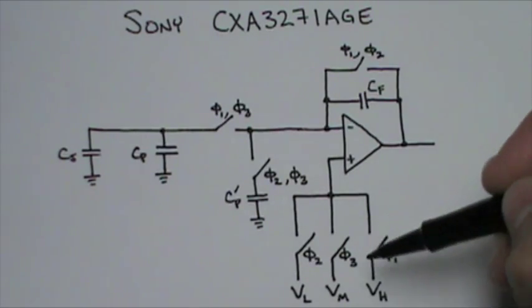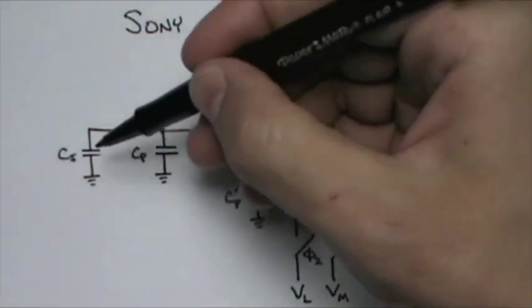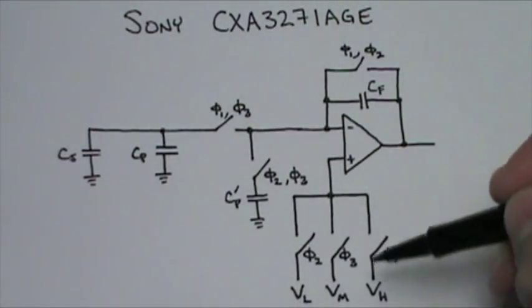During phase 1, this switch, this switch, and this switch are closed. The op amp behaves as a buffer driving the replica capacitance voltage to equal VL.